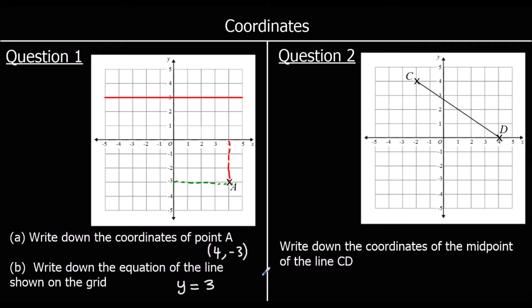Question 2, write down the coordinates of the midpoint of the line CD. So where is the middle of the line that is shown on the grid? So to get from C to D, we go along 1, 2, 3, 4, 5, 6. So we go along 6 and down 1, 2, 3, 4.